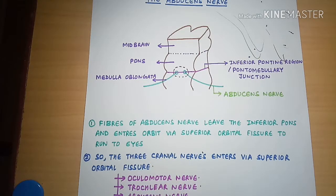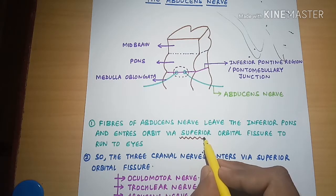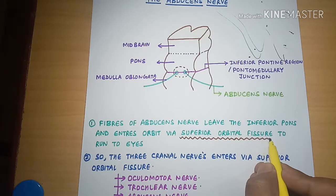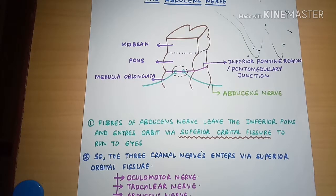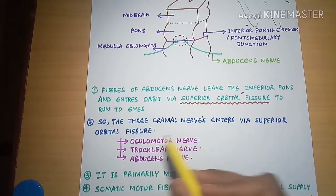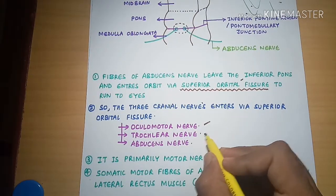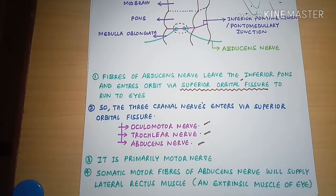There are three nerves which enter the orbit through the superior orbital fissure. The first is the oculomotor nerve, the second is the trochlear nerve, and the third is the abducens nerve. All three of these cranial nerves enter the orbit through the superior orbital fissure.